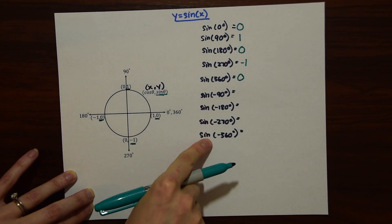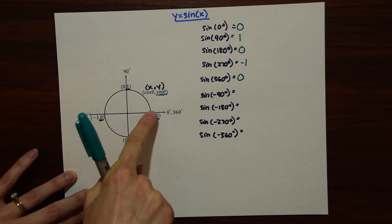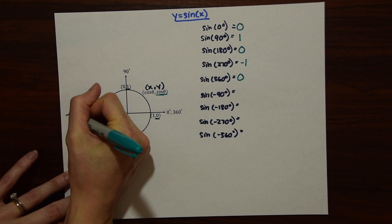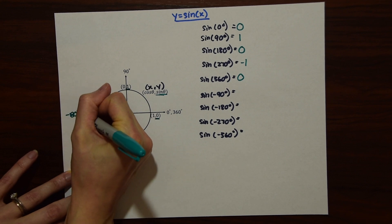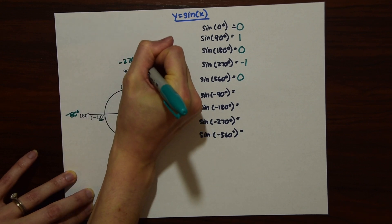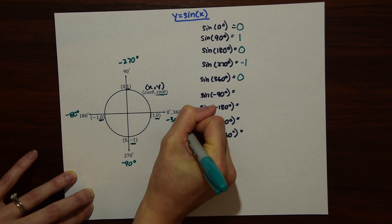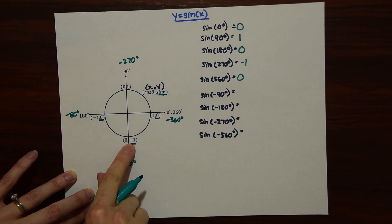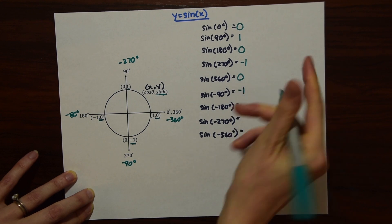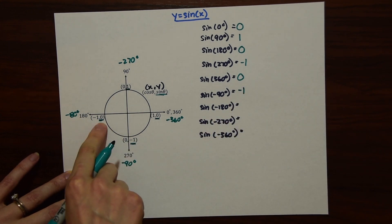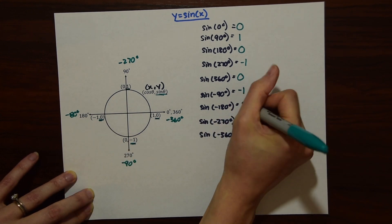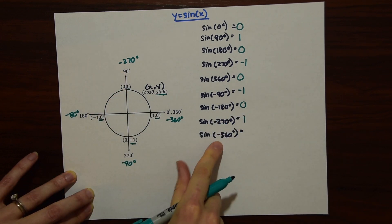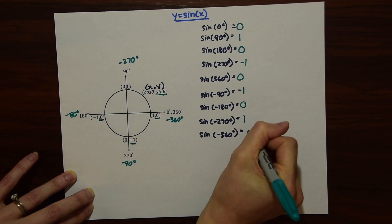Now we're going to do the negative degree values, which go the other way around the unit circle. So minus 90 degrees is down here — we look at that y coordinate and it's minus 1. Minus 180 we have 0, minus 270 is 1, and then minus 360 is 0.